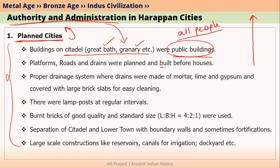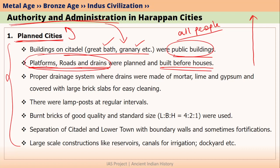Moreover, in all Harappan cities, houses were not built first. Initially, platforms, roads, and drains were built, and only after that did people start building their houses. This means somebody planned the city, built platforms, roads, and drains first, and then individual people came and built their own houses. That is why authority and administration existed in Harappan cities. Moreover, there was a proper drainage system that was elaborately designed and built — this again means there was elaborate planning by authorities.